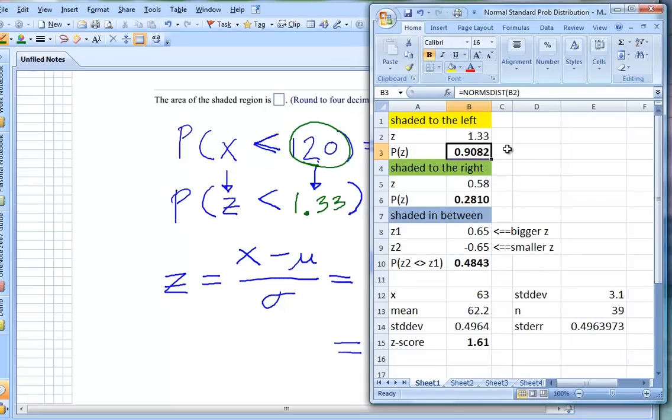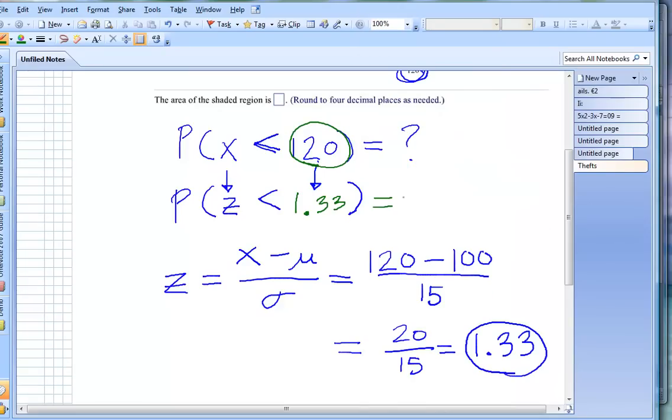If you're using a table and you look up 1.33, you should see that it gives you a probability, an area under the curve to the left, of 0.9082. So this is 0.9082. And that is our final answer.